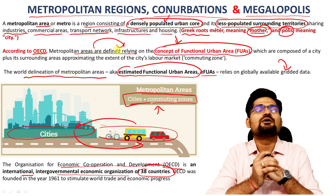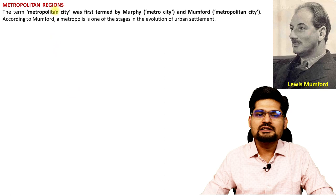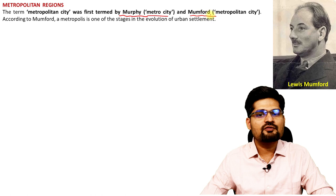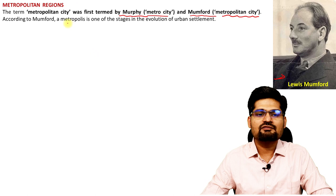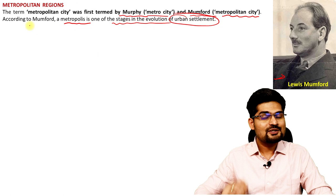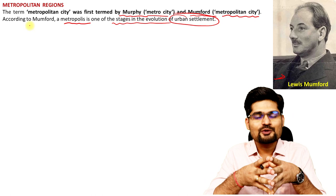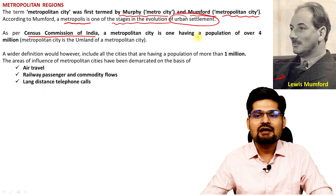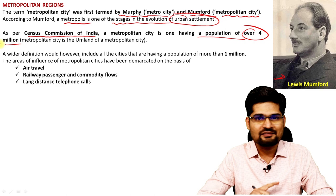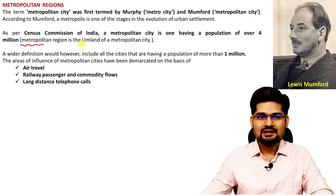The concept of metropolitan region was first propounded by Murphy as 'metro city' and by the great scholar Mumford as 'metropolitan city.' Louis Mumford's work is considered one of the pioneer works in urban geography. Mumford defined a metropolis as one of the stages in the evolution of urban settlement. According to the Census Commission of India, a metropolitan city is one having a population of over 4 million — that is, 40 lakh-plus people.